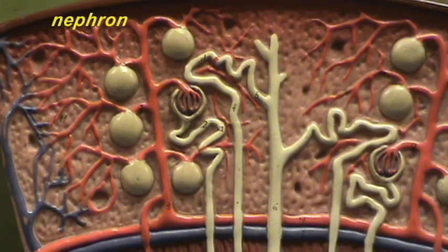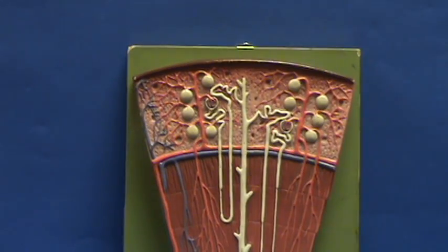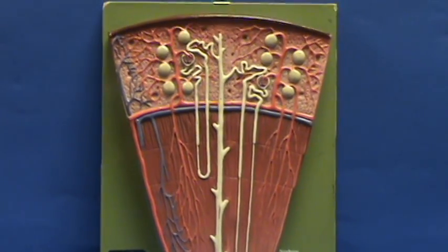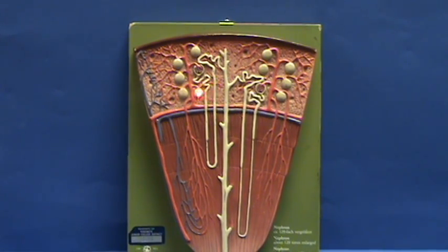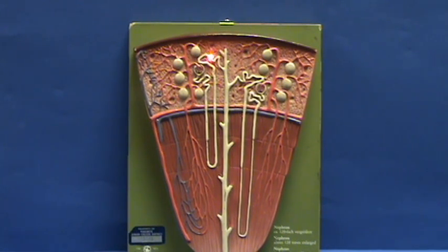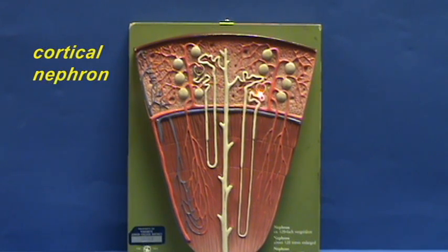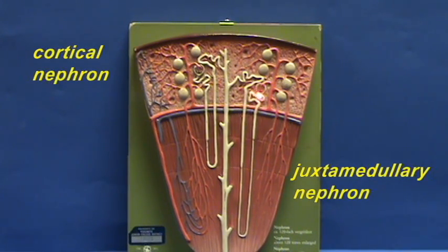The nephron is the functional unit of the kidney, and in this particular model, you're only seeing two complete nephrons. This nephron, which has a renal corpuscle which is more superficial in the cortical tissue, is referred to as a cortical nephron. And this one, which has a renal corpuscle which is closer to the boundary between the cortex and the medulla, is referred to as a juxtamedullary nephron.